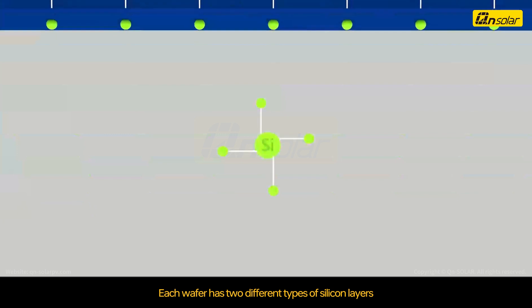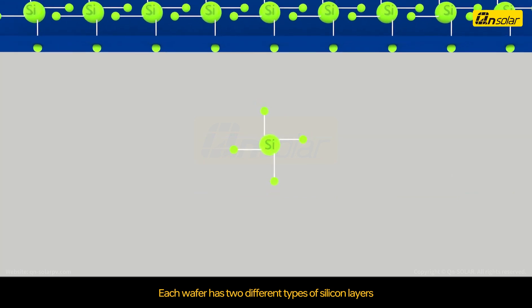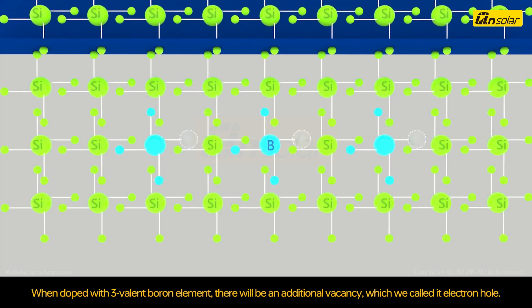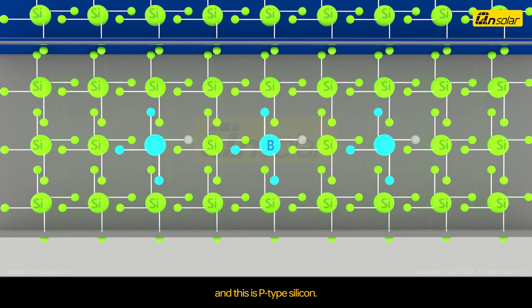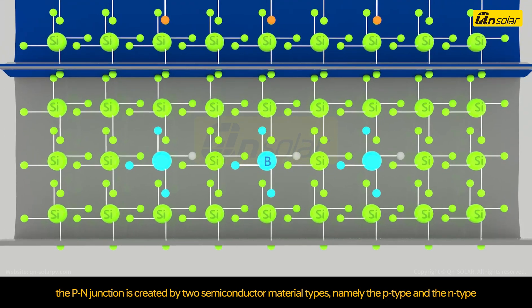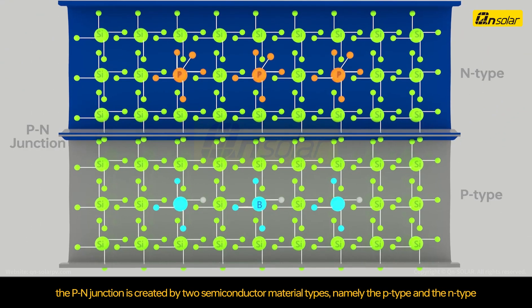Each wafer has two different types of silicon layers. When doped with three-valent boron elements, there will be an additional vacancy, which we call an electron hole. And this is p-type silicon. The p-n junction is created by two semiconductor material types, namely the p-type and the n-type.